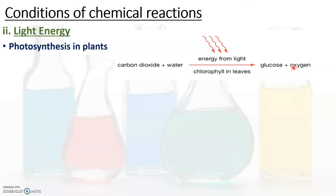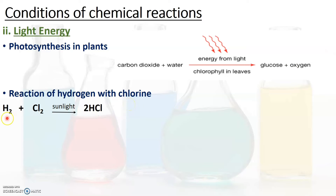Another example of a light-energy reaction is the reaction of hydrogen with chlorine. Hydrogen reacts with chlorine in the presence of sunlight to give the product hydrogen chloride. This reaction occurs explosively when there is direct sunlight, but with diffused sunlight the reaction is very slow — in both cases, the product is hydrogen chloride.